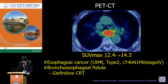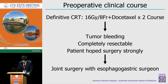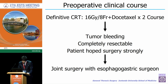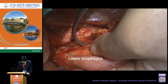Definitive chemoradiotherapy was started. However, after starting chemoradiotherapy, tumor bleeding was detected. The patient strongly hoped for surgery and we judged the tumor as completely resectable, so joint surgery with an esophageal gastric surgeon was performed.